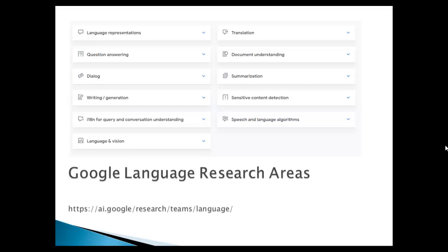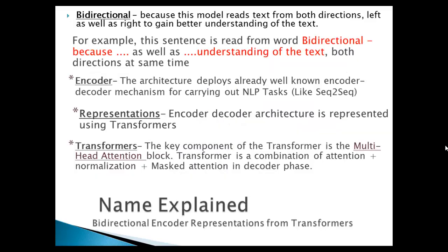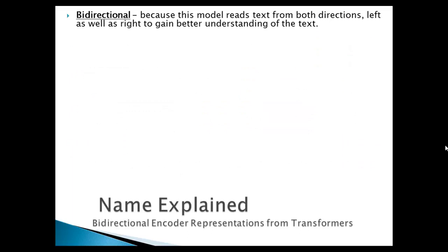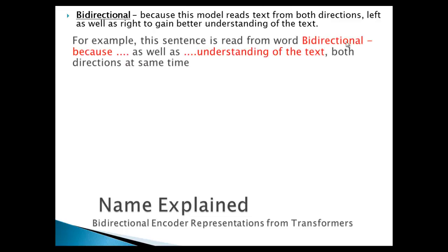So let's start with BERT. BERT stands for Bidirectional Encoder Representation from Transformers. Bidirectional means this model reads text from both directions. Suppose you are reading text on your screen — it reads from left to right, and at the same time it is also reading from right to left. So if it is reading in both directions it gets a better sense of the text and can make better decisions.